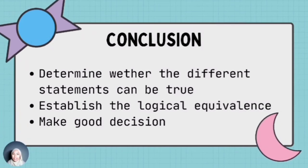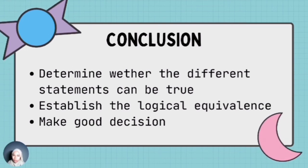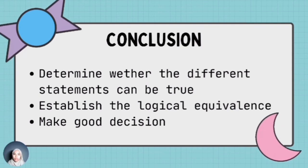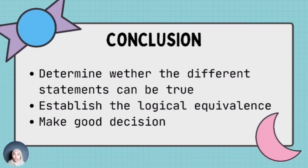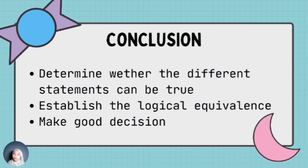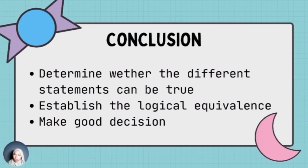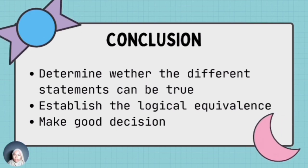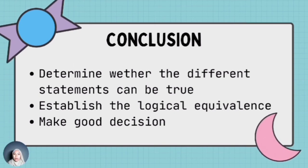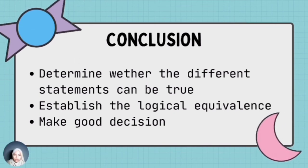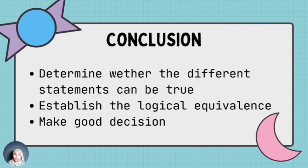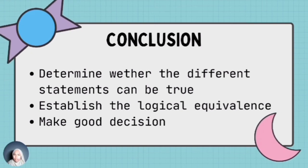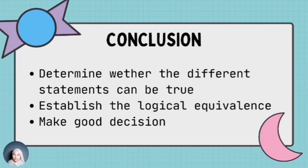From the introduction, the list of laws, and the examples, we learned how to determine the truth value between two or more statements. We learned how to take the structure, terminology, and language of statements and show whether they can be true or not. We know how to establish logical equivalence from the laws of logic, since logical equivalence only occurs when two statements have the same truth value. Logic is important because it influences every decision we make in our lives — if no one thought logically, nothing would make any sense. That's all from us. Thank you.